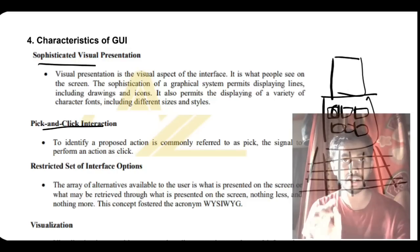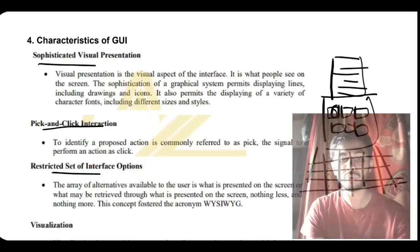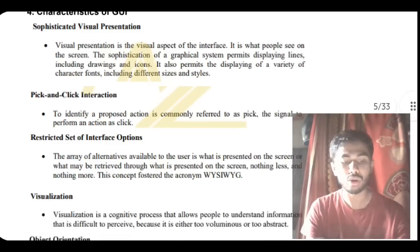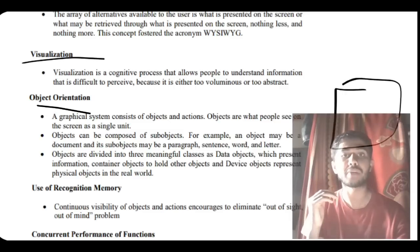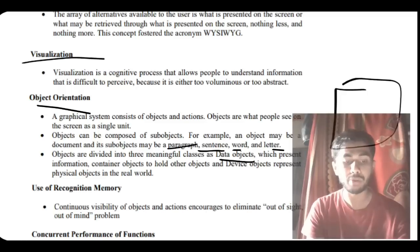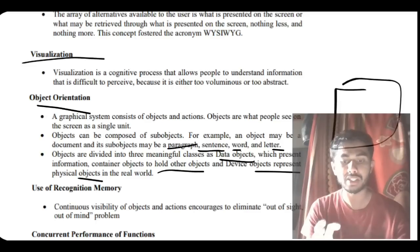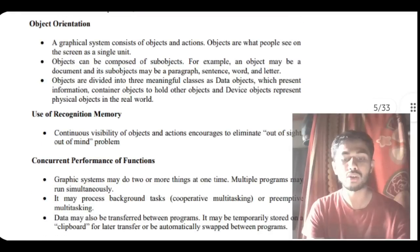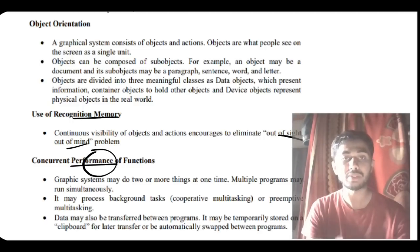When you click the right mouse button, you get a restricted set of interface options — only a limited number of options, not hundreds. When you click open, the app opens with a background screen — that is called visualization. Then there is object orientation — tasks change the object, which can consist of data, information, containers of information, variables, or physical objects represented virtually. Finally, user recognition memory and concurrent performance — everything is always visible on screen, eliminating out-of-sight out-of-mind problems, and multiple tasks run concurrently in the background.